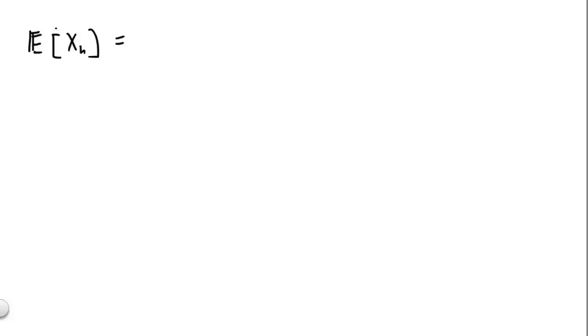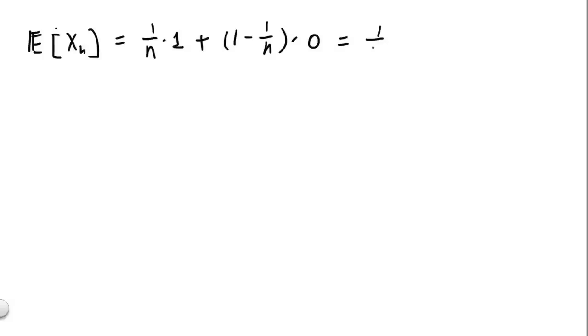In part a, we're to compute the expected value and variance for both xn and yn. The expected value of xn is given by the probability it's at 1, which is 1 over n, times value 1, plus the probability of being at 0, which is 1 minus 1 over n, times value 0. That gives us E[xn] = 1 over n.